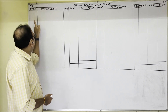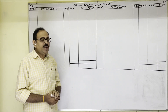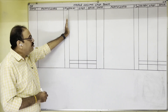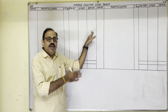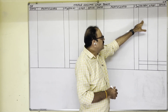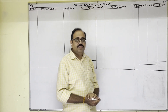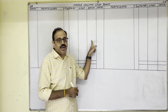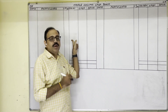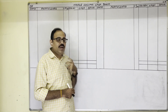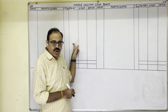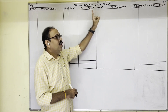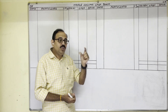The cash book format is account format with a debit side and a credit side. The debit side has columns: date, particulars, LF (ledger folio) number, discount allowed, cash, and bank. The credit side is the same, except instead of discount allowed, there is a discount received column. The discount column is a memorandum column. As three amount columns — discount, cash, and bank — this table is known as the triple column cash book.